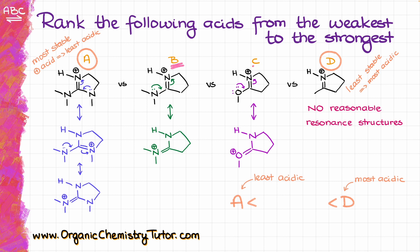Now I have molecules B and C, each of which only has one additional resonance structure. However, there is an important difference between them. In molecule B, the charge is located on nitrogen in both resonance structures. In molecule C, the positive charge is on nitrogen in one structure and on oxygen in the other. Since they have the same number of resonance structures, we need to look at the position of the charge.